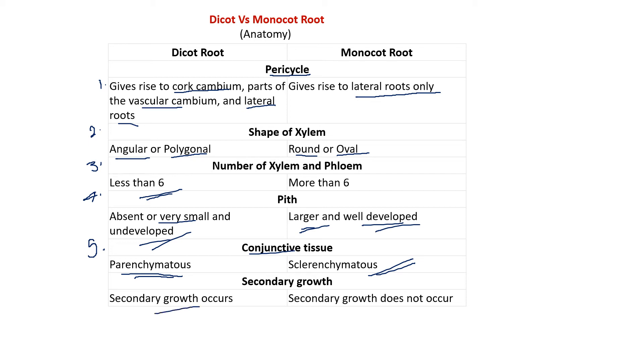Secondary growth takes place in the case of dicot root, while in the case of monocot root, secondary growth does not take place. This is the sixth difference.